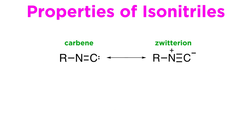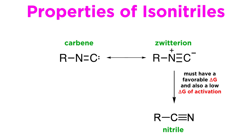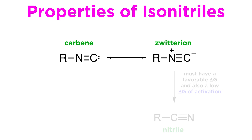The stability of these unusual compounds illustrates the principle that, for a reaction to occur readily, it must have both a favorable delta G and a low delta G of activation. Due to their high delta G of activation, isonitriles are quite stable, do not easily convert to nitriles, and display their own quite fascinating chemistry.